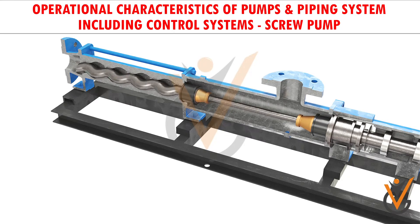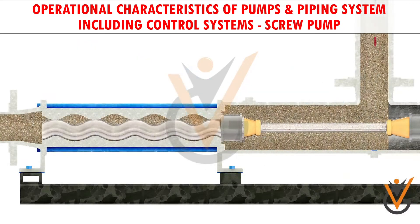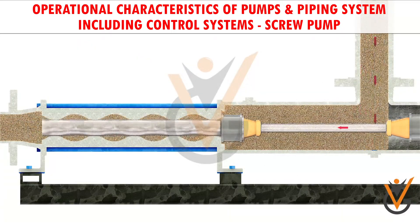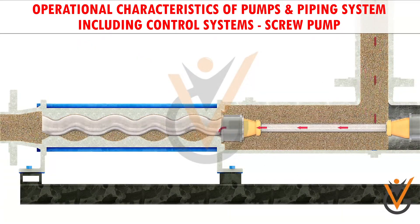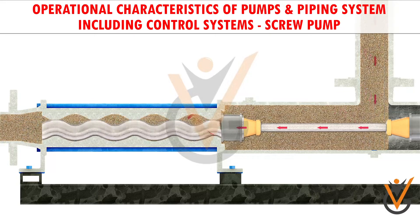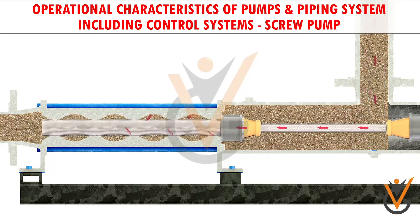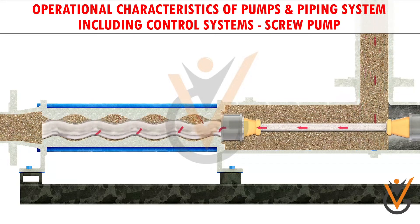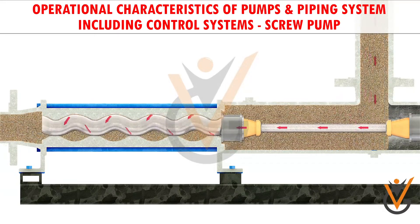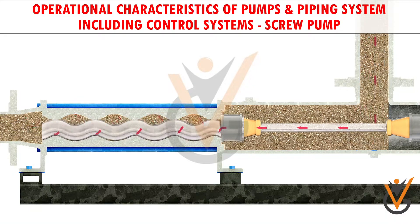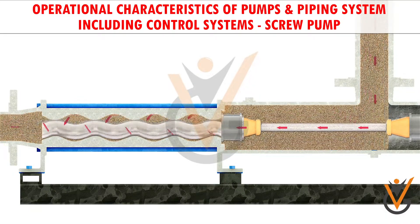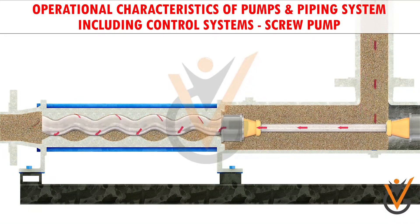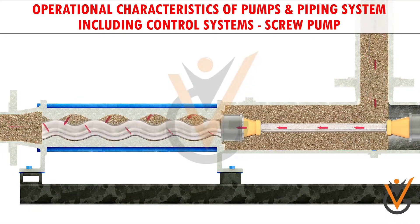Fluid enters the inlet before being transferred to the outlet via cavities between intermeshing screws. A progressing cavity pump excels when handling highly viscous fluids which are required to be moved over long distances.